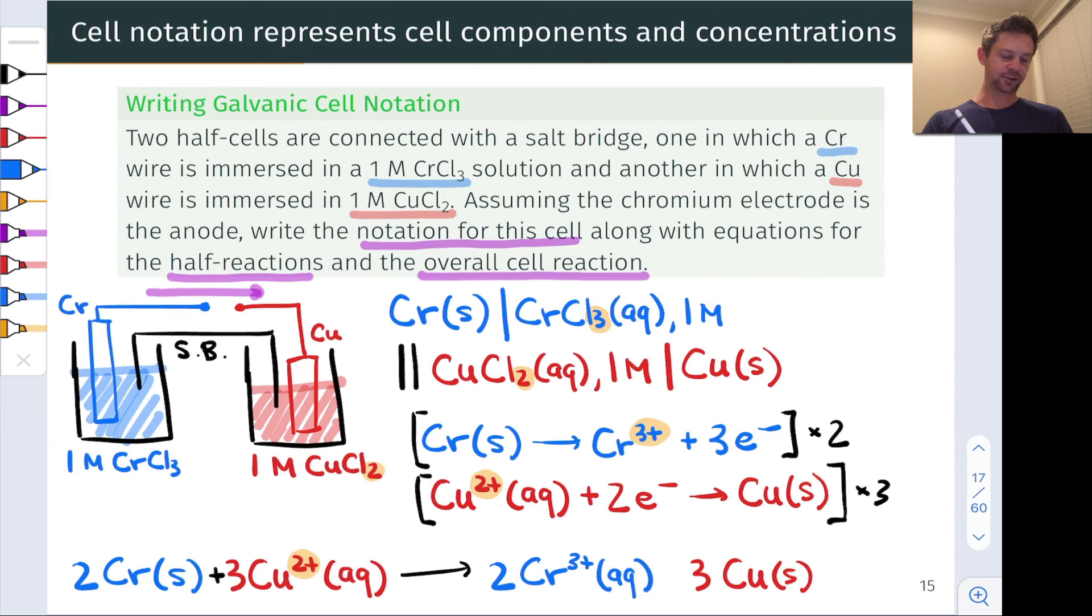And, as always, it's worth doing a sanity check here to make sure that everything is balanced. I've got 2 chromiums on the left, 2 chromiums on the right, 3 coppers on the left, and 3 coppers on the right. And what about charge? Well, I've got plus 6 on the left-hand side, 3 copper 2-pluses, and plus 6 on the right-hand side, with 2 chromium 3-pluses. And that positive 6 charge in the physical galvanic cell is balanced by all these chlorides, which are essentially just spectator ions that may move around as the cell discharges, but otherwise don't take part in any electron transfer at all.